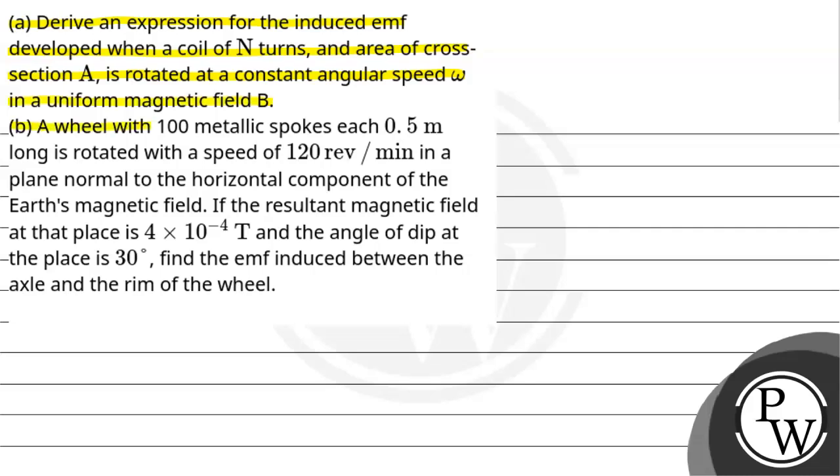Part B. A wheel with 100 metallic spokes, each 0.5 meter long, is rotated with a speed of 120 revolutions per minute in a plane normal to the horizontal component of the earth's magnetic field. If the resultant magnetic field at that place is 4 times 10 to the minus 4 tesla and the angle of dip at that place is 30 degrees, find the EMF induced between the axle and the rim of the wheel.